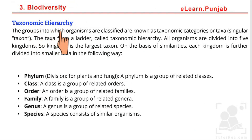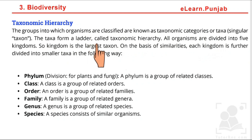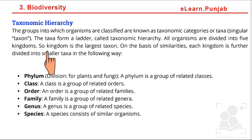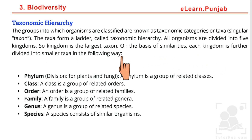The groups in which organisms are classified are known as taxonomic categories or taxa. The taxa form a ladder called the taxonomic hierarchy. All organisms are divided into five kingdoms. The kingdom is the largest taxon. On the basis of similarity, each kingdom is further divided into smaller taxa in a specific hierarchy.